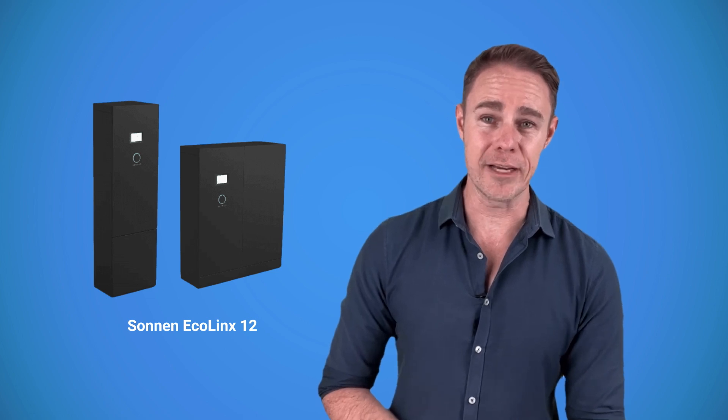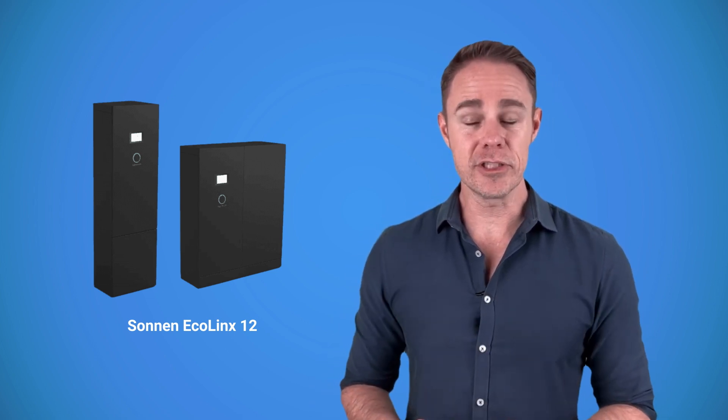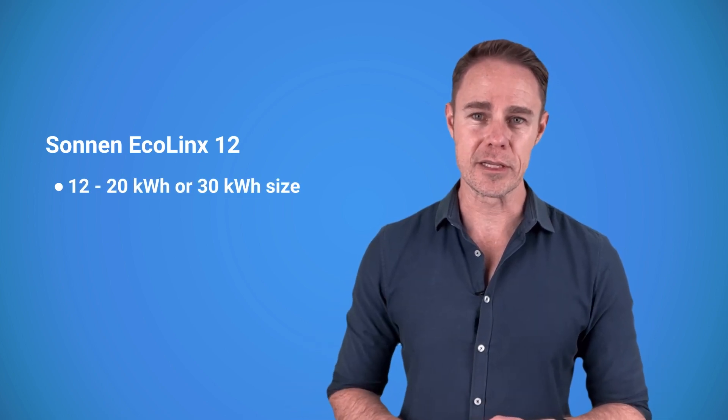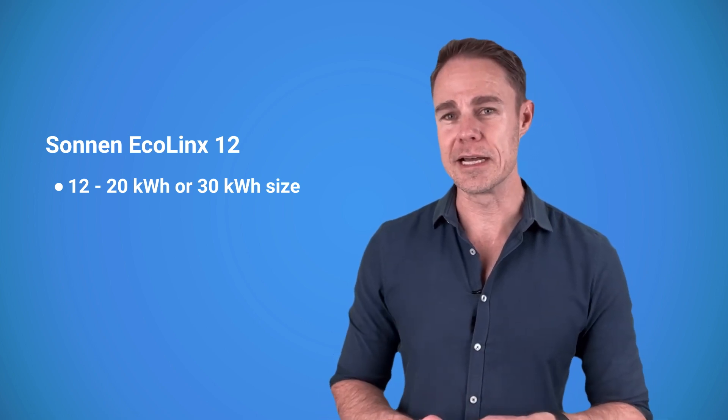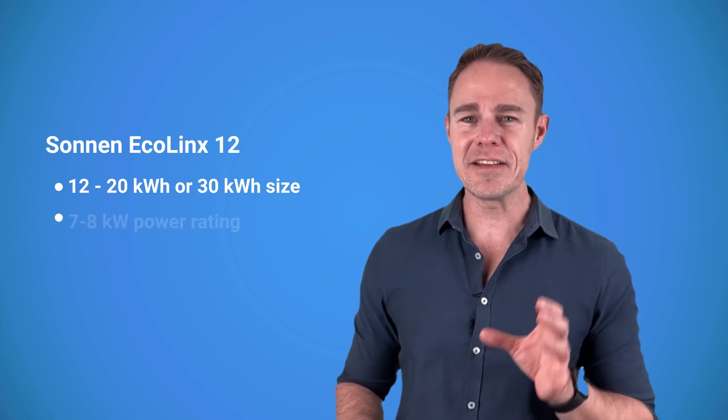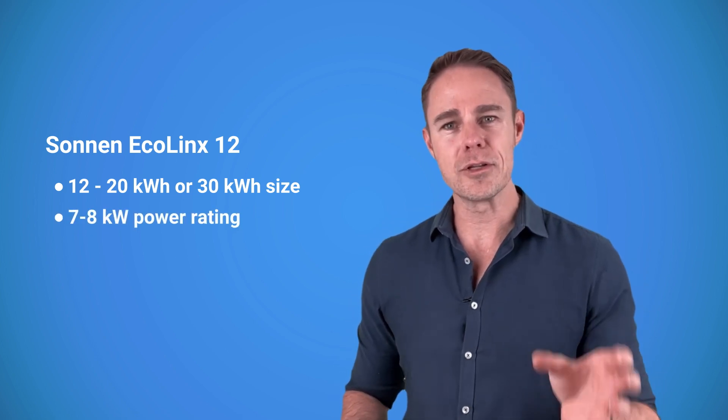I also saw a lot of people suggesting Sonnen Ecolinx 12 as a good home battery. It's an AC battery, just like Powerwall, and it's scalable from 12 to 20 kilowatt hours in 2 kilowatt hour increments. You can also get a single 30 kilowatt hour size. Regardless of capacity, the power rating is at 7 kilowatts off-grid and 8 kilowatts grid time.